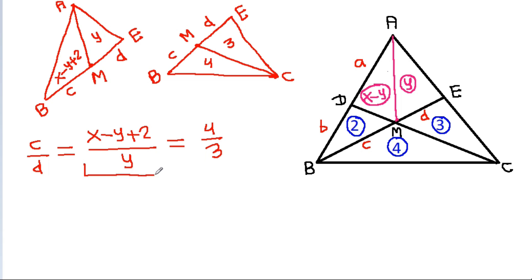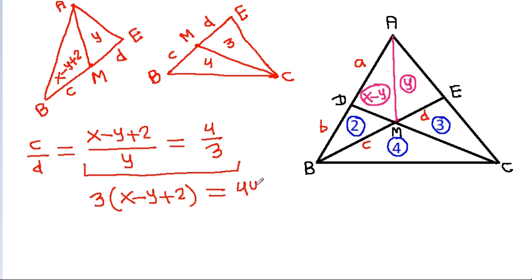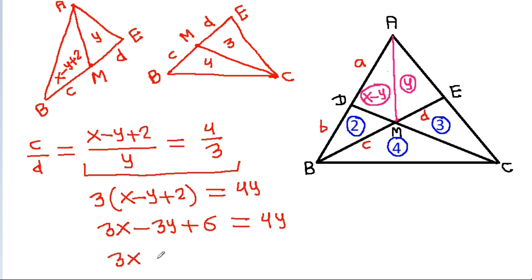From this equation, if we cross multiply: 3 times (X minus Y plus 2) equals 4 times Y. That gives 3X minus 3Y plus 6 equals 4Y, so 3X plus 6 equals 7Y. Therefore Y equals (3X plus 6) divided by 7.